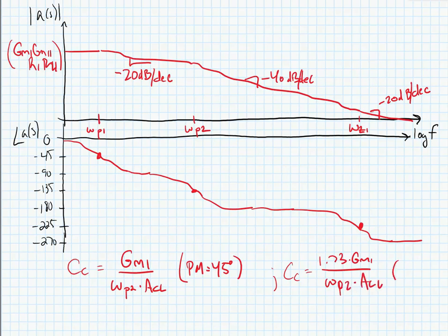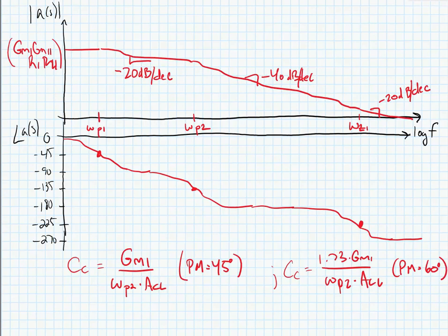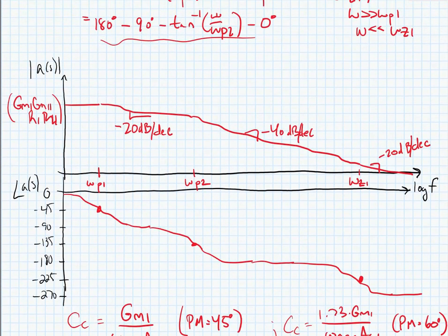Now the problem that we're going to run into is that that zero is going to cause us problems. We have a potential scenario where we still have some gain but our phase shift is greater than 180 degrees. Here's the line where our phase shift crosses 180 degrees—we might still have some gain out here, and the zero is exacerbating this because it reduces the slope of the degradation of the gain.